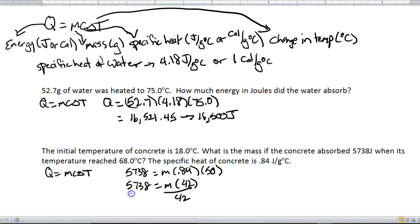And now in order to get M by itself, we're going to divide both sides by 42. And we get that M equals 136.619, blah, blah, blah, blah, blah, blah. But when we look back at our original numbers, so 18.0 has 3 sig figs, 5738 has 4 sig figs. This has 3 sig figs. This one here has 2 sig figs, so our final answer can only have 2. So we get 1, 2. The next number is a 6, so we're going to round up. So that becomes 140. This is mass, so the units are grams.